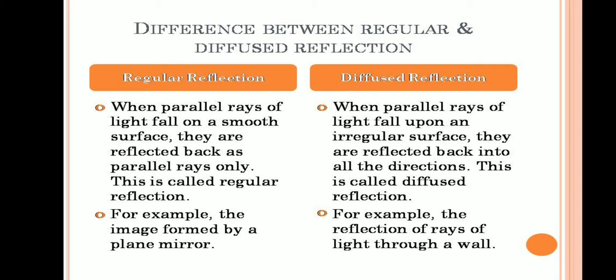Difference between regular and diffused reflection: In regular reflection, when parallel rays of light fall on a smooth surface, they are reflected back as parallel rays only. In diffused reflection, when parallel rays fall on an irregular surface, they reflect back in all directions and will not be parallel. Regular reflection example is the image formed by a plane mirror; diffused reflection example is reflection of light rays through a wall.